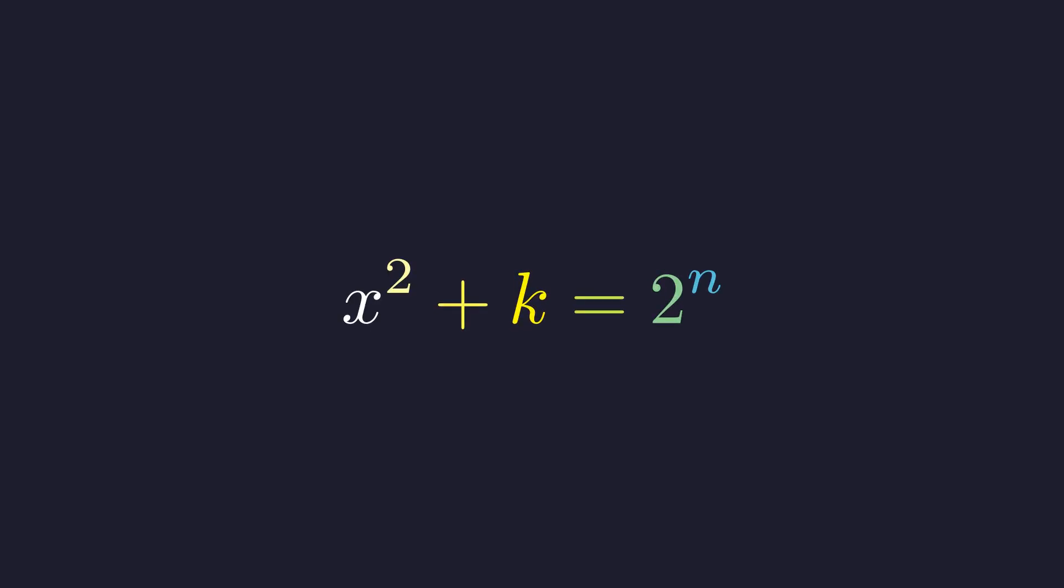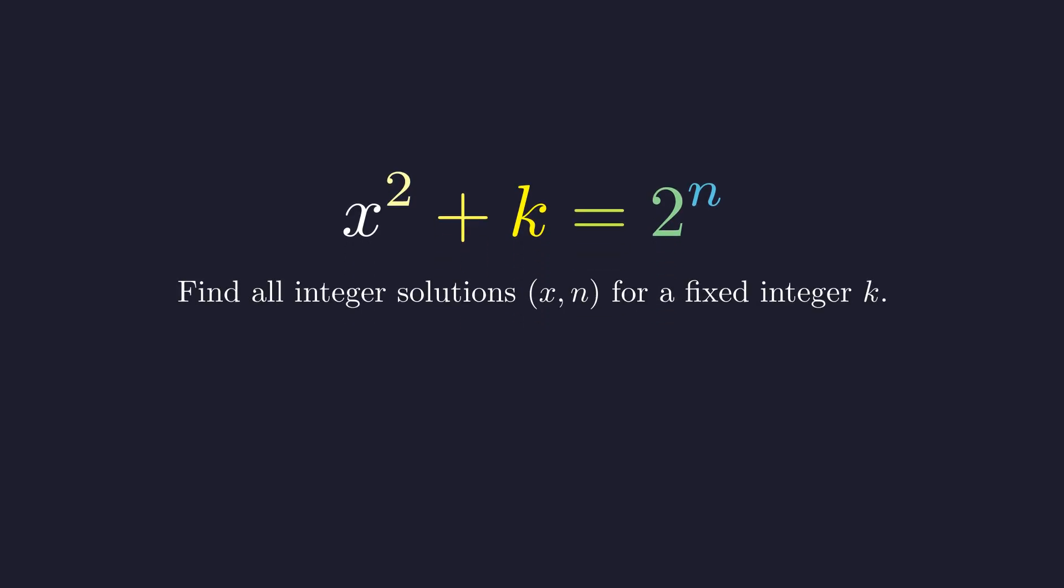We're going on a hunt for integer solutions to this equation, a classic from number theory known as a Diophantine equation. Our journey will depend entirely on the value of the integer k. The question asks for all pairs of integers x and n that solve this equation, for any fixed integer k we might choose.